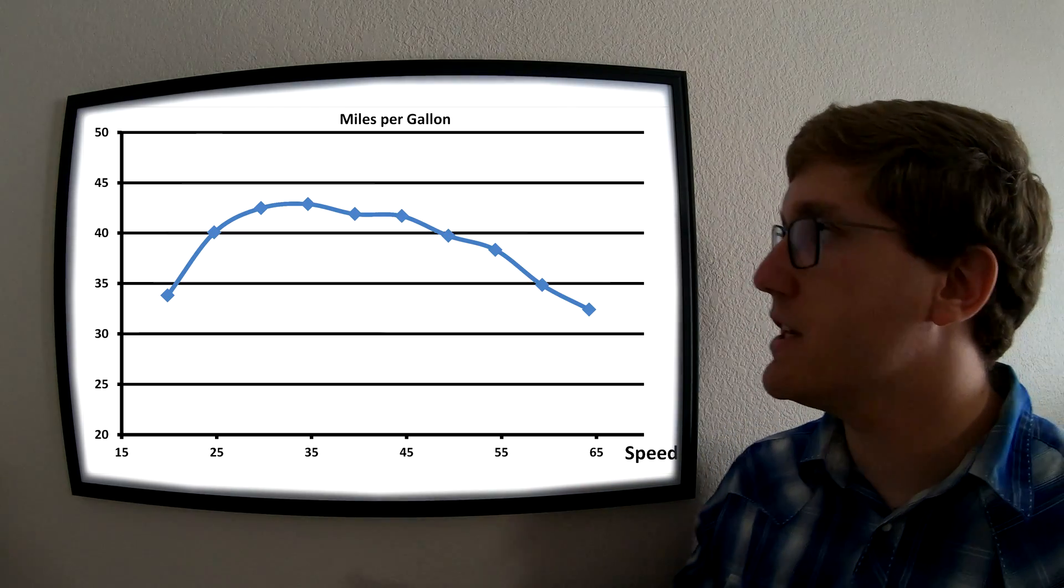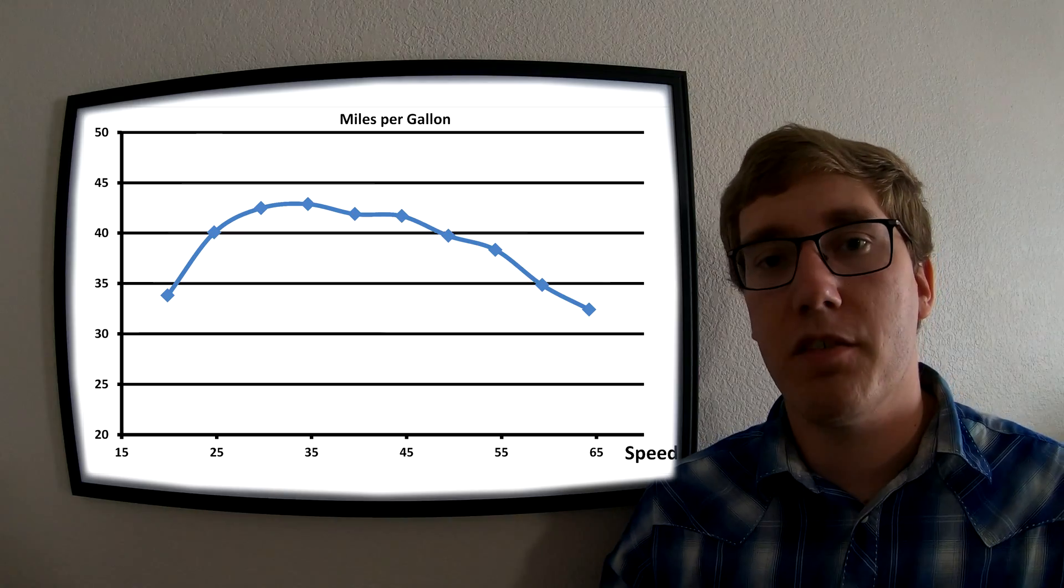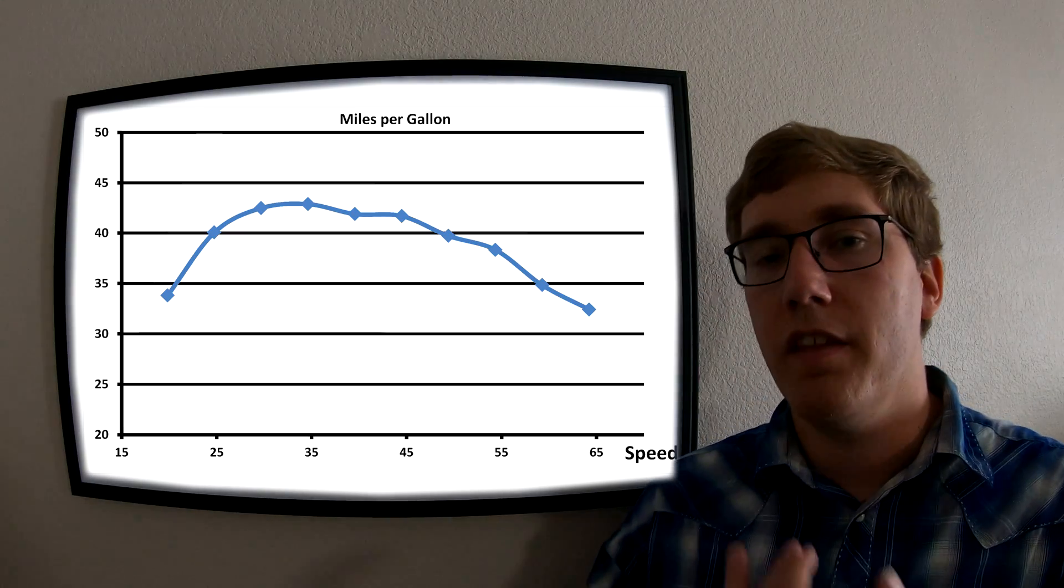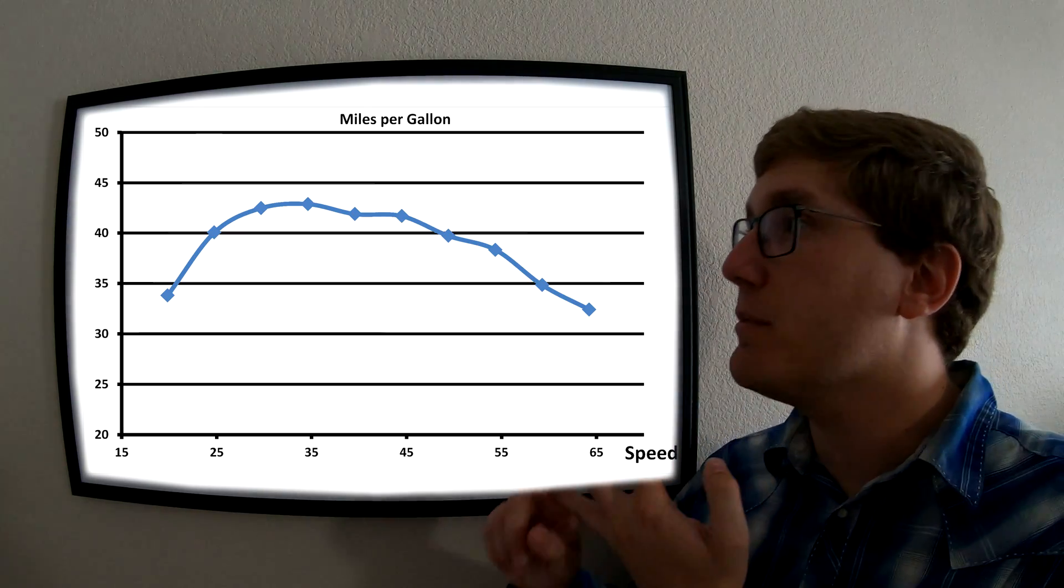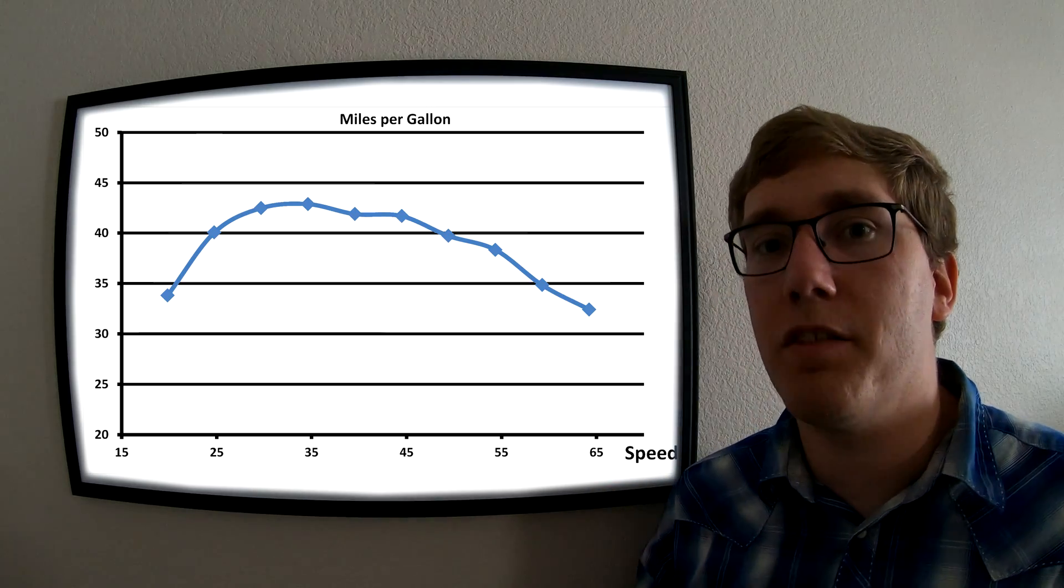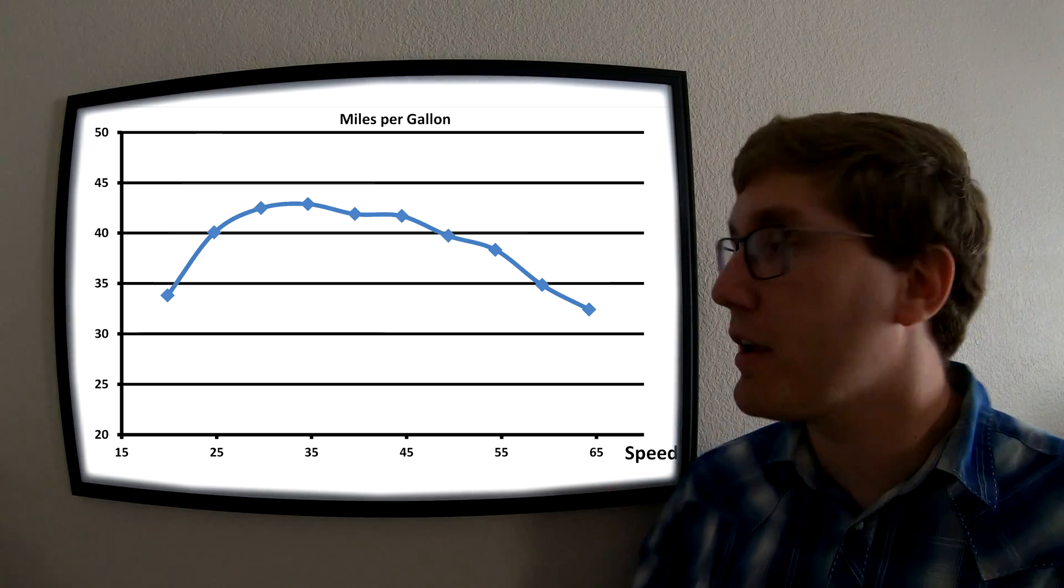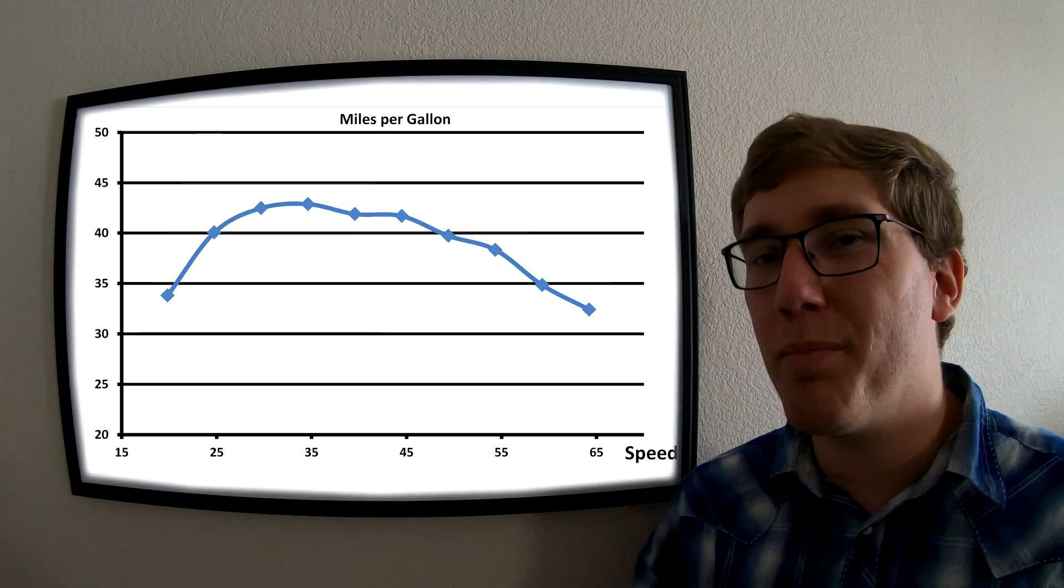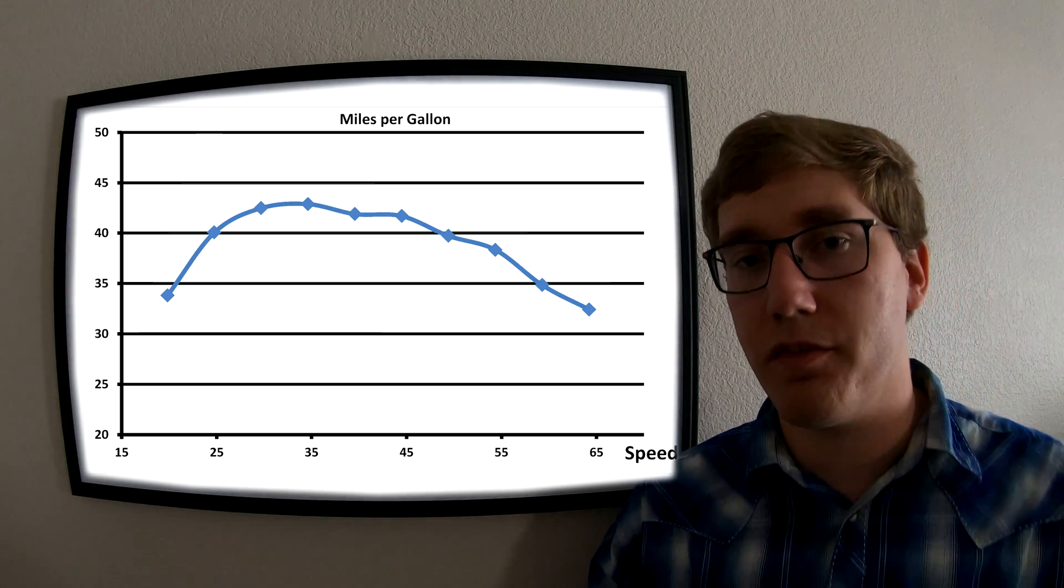This is mostly due to the fact that as we get to higher speeds and the engine runs at higher RPMs, it's not running as efficiently, and you're beginning to really battle drag as you get above the 50 mile per hour mark. That's why we see a pretty quick decline in fuel efficiency.